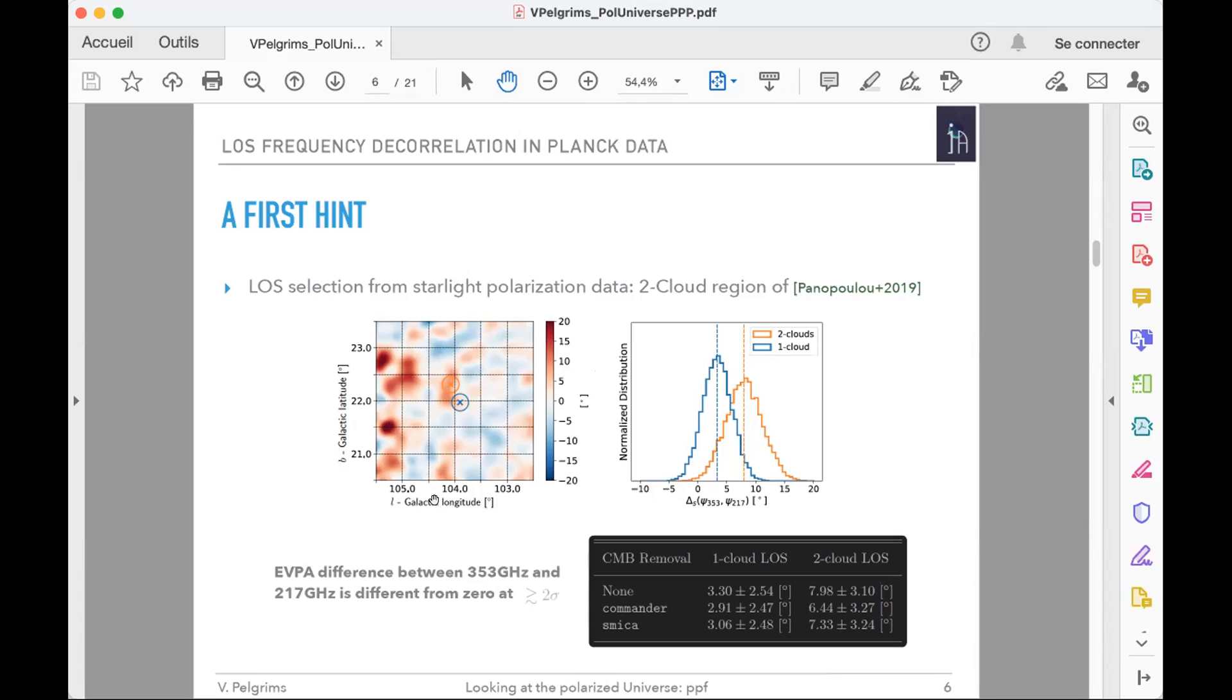What we did then is look at those regions of the sky in the Planck polarization maps at 353 and 217 gigahertz and compute the EVPA differences. What we obtained is that the EVPA difference is not compatible with zero for the two-cloud region, while it is compatible with zero for the one-cloud region, and this fact is apparently robust against different estimates of the CMB. We take this as a very first hint of line-of-sight frequency decorrelation.